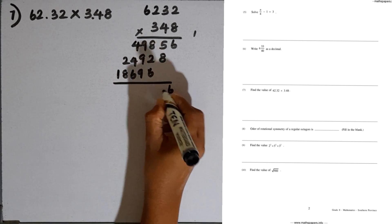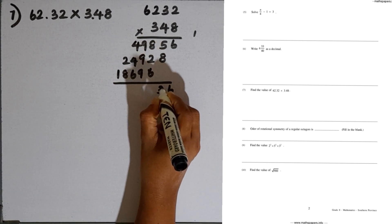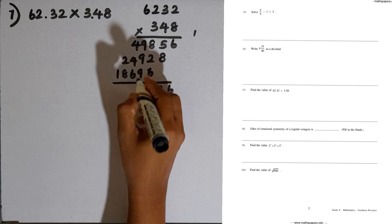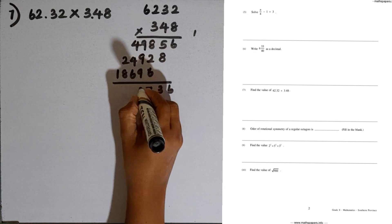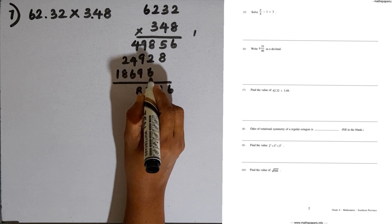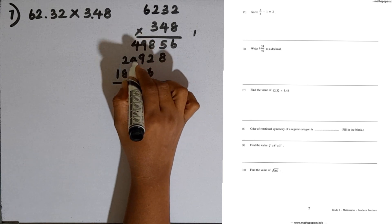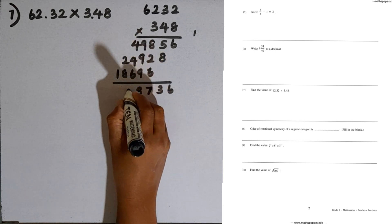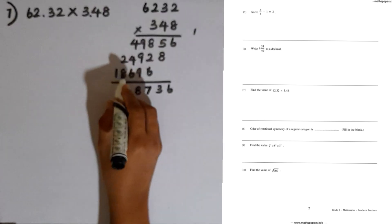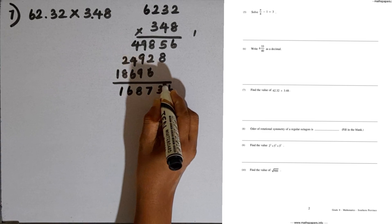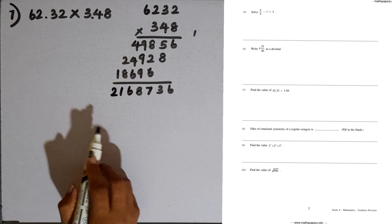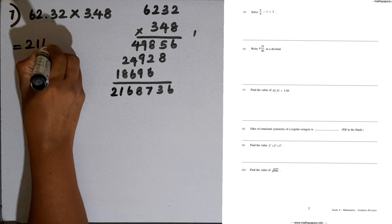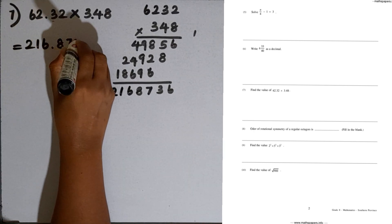Now we add all the partial products. Adding column by column: 6; 8 plus 5 is 13 carry 1; 6 plus 8 plus 16 plus 1 is 17 carry 1; then 9 plus 3 gives 27 plus 2 is 28 carry 2; 4 plus 4 is 8 plus 6 is 14 plus 2 is 16 carry 1; 8 plus 2 is 10 plus 1 is 11 carry 1; 1 plus 1 is 2. We keep 4 decimal places in the answer, so the result is 216.8736.